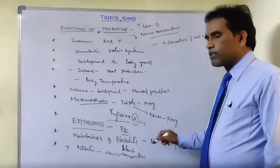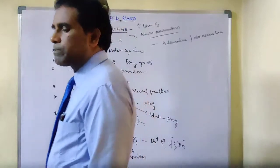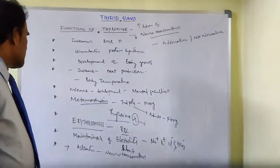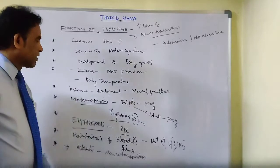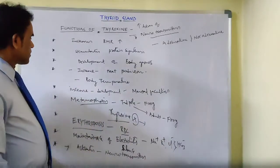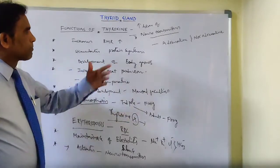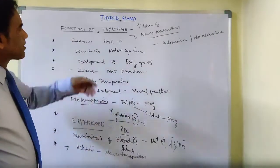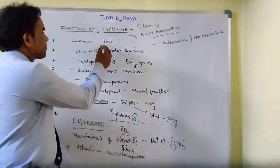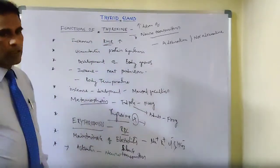Thyroxine also maintains electrolyte balance, helps in erythropoiesis, helps in metamorphosis so larvae become adults, helps to maintain body temperature, development of body growth, stimulates protein synthesis, and is mainly concerned with BMR. So these are the functions of thyroxine.